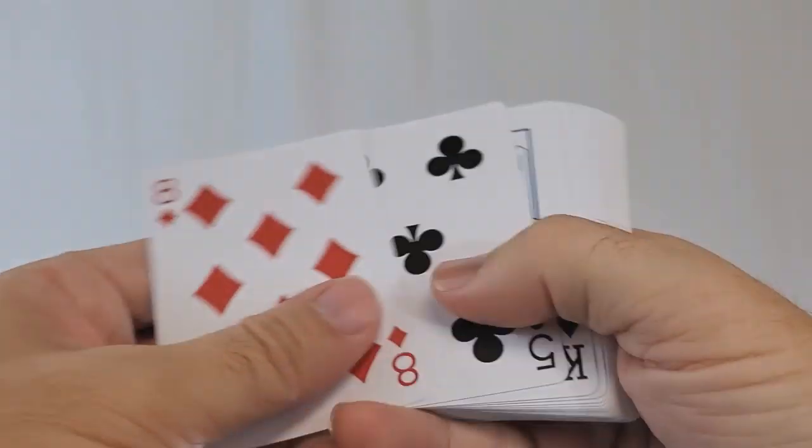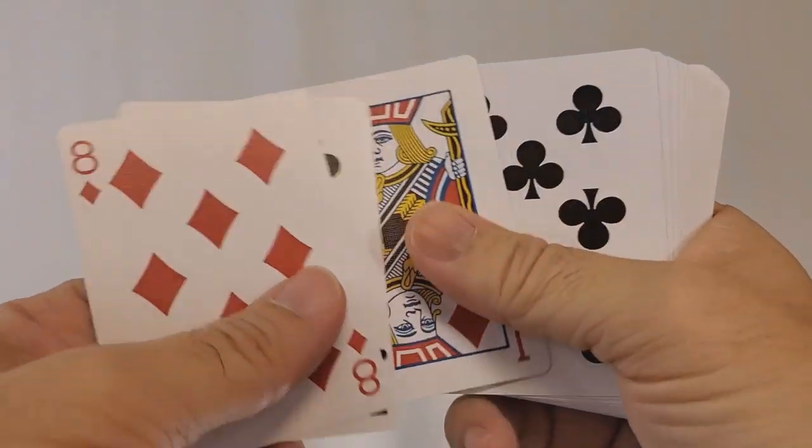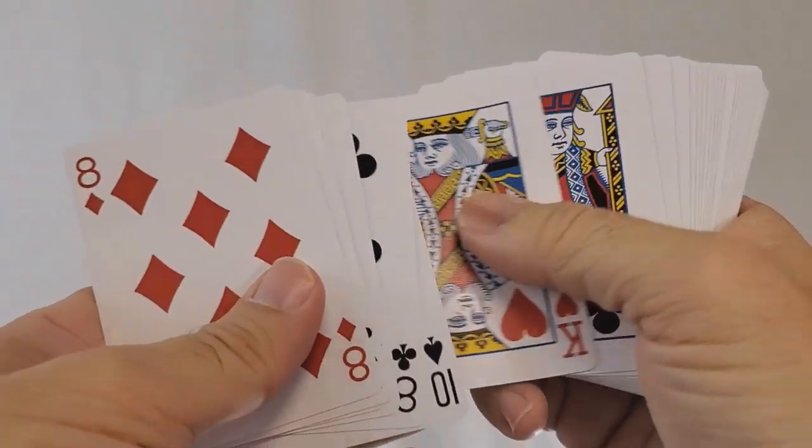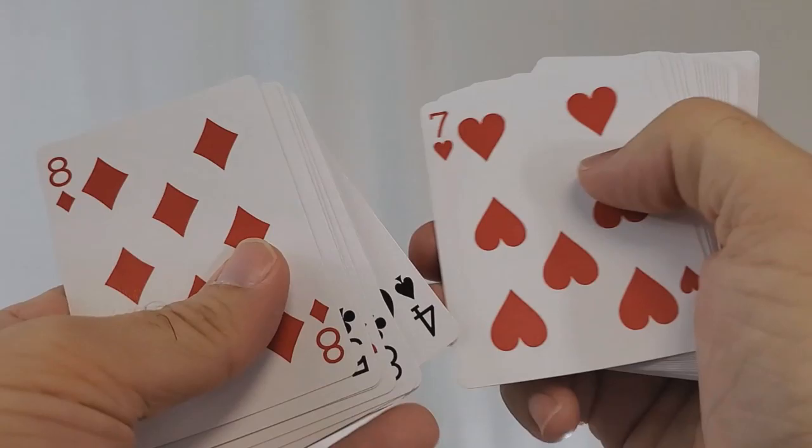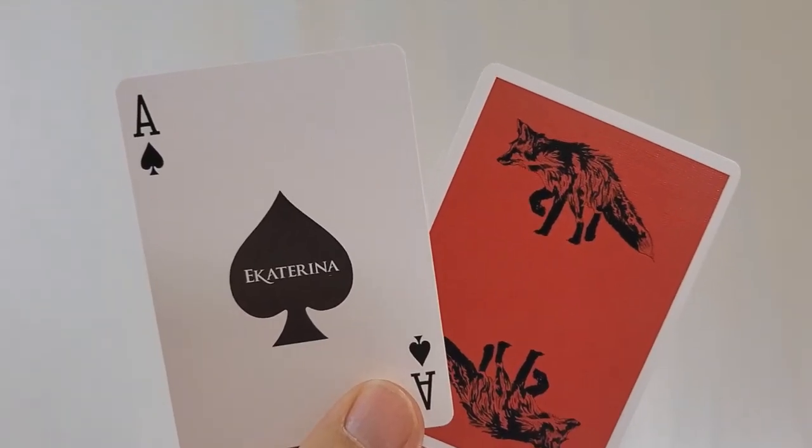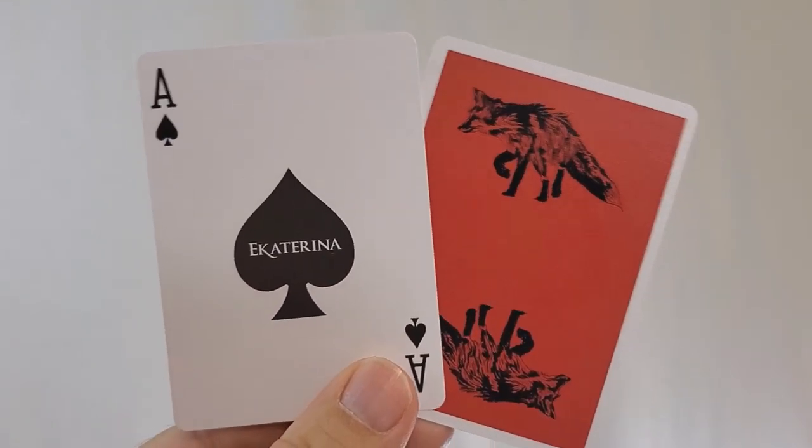Other than that the deck is completely standard as far as faces go. Your pips and indices should all look standard, courts are standard, everything is exactly how you like it, and your ace of spades is just a simple bold spade pip in the center that says Ekaterina.